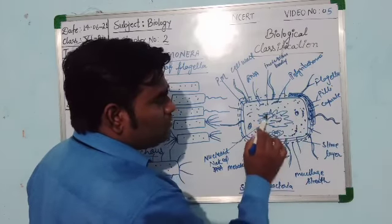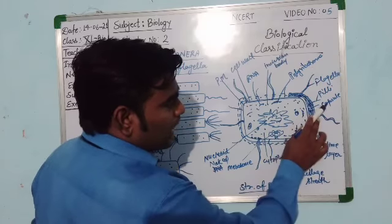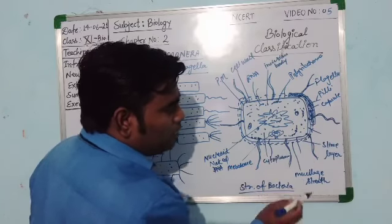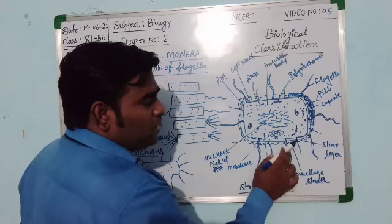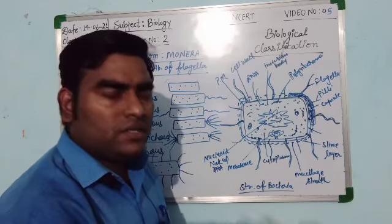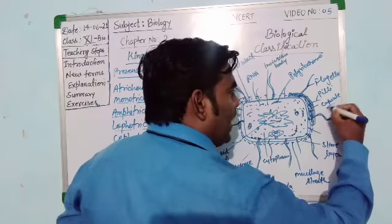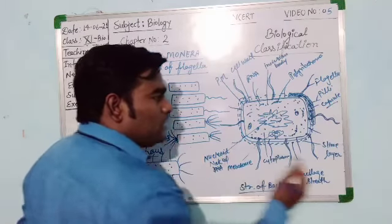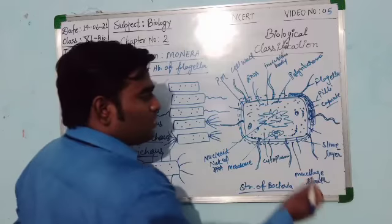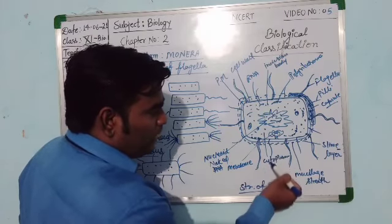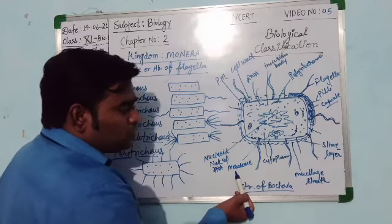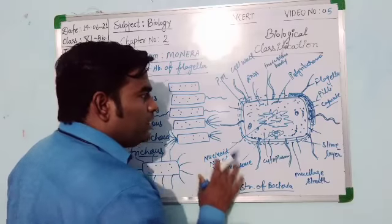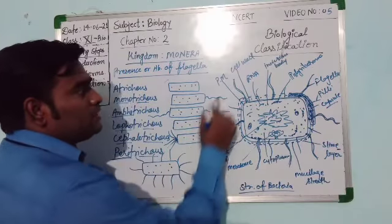These are the flagella — so many flagella are found in this bacteria. These are the pili. This is the capsule and this is the slime layer. The capsule and slime layer are collectively known as the mucilaginous sheath. If the mucilaginous sheath is hard and rigid, it is called the capsule; if it becomes loose, it is called the slime layer. This is the cytoplasm and this is the mesosome.